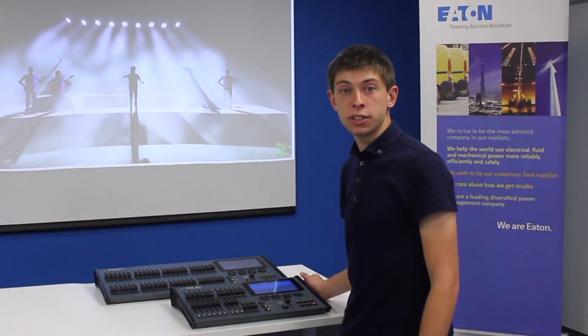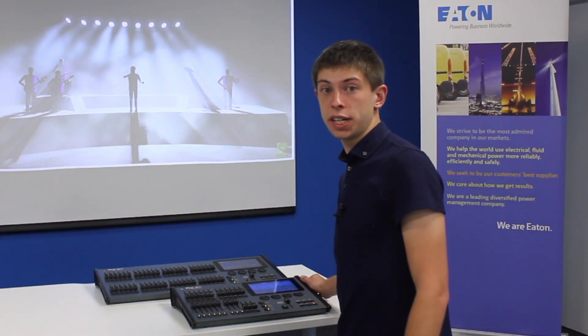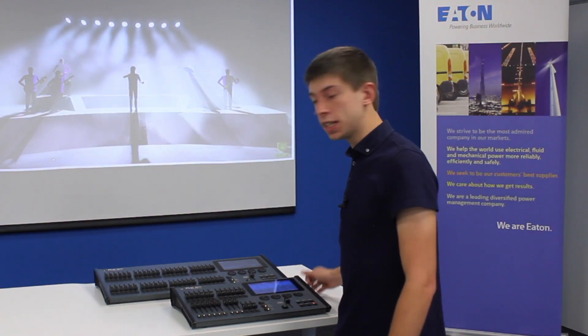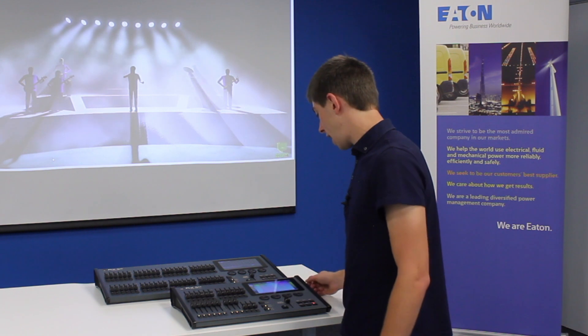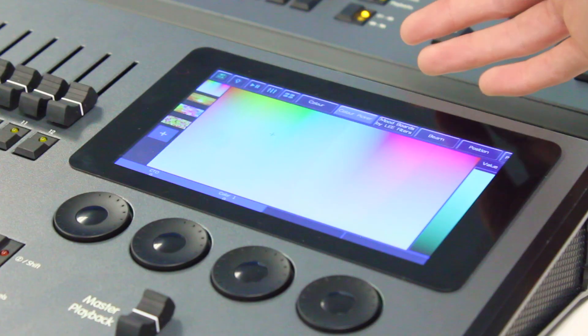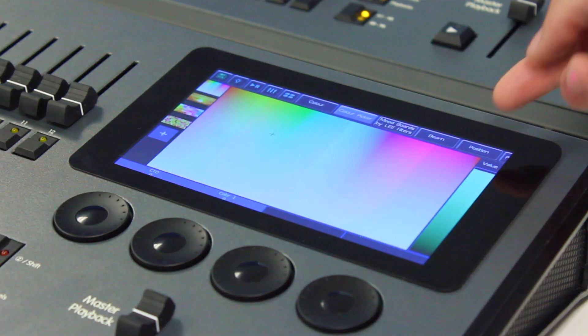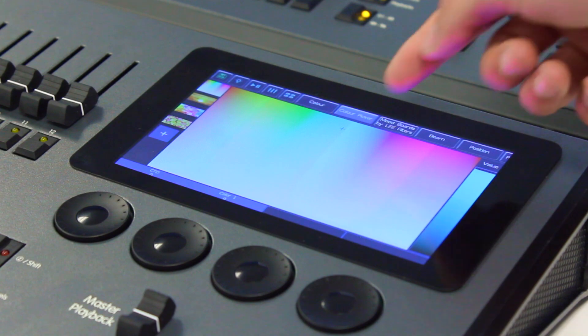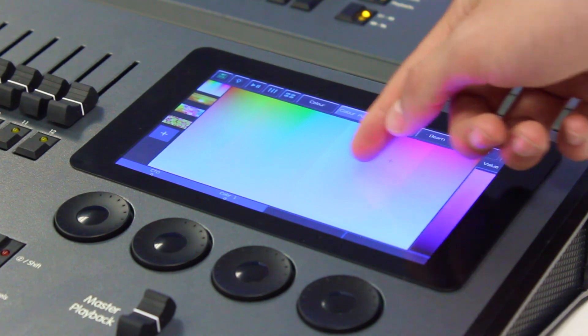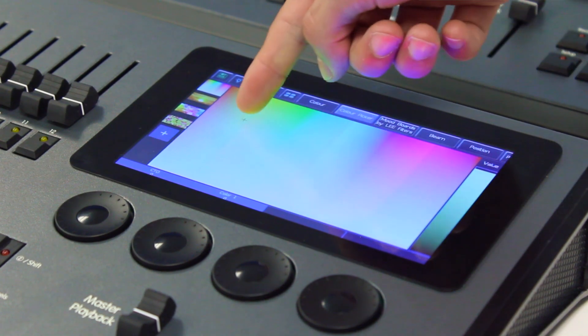Another way of controlling the colour of your fixtures is by using the colour picker. Press that and you're presented with a colour picker image. In there you can press and this will apply that colour to your lights.